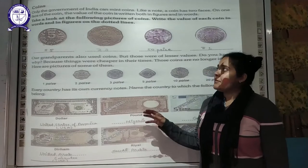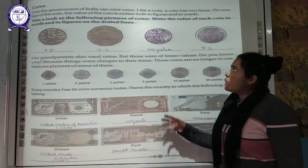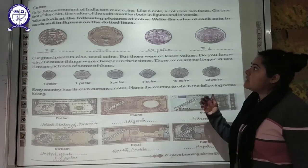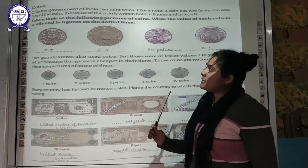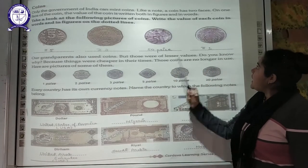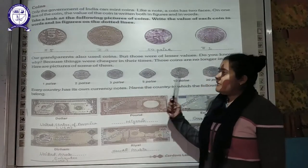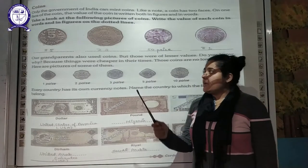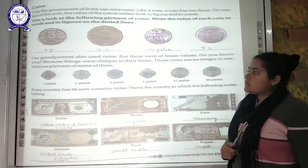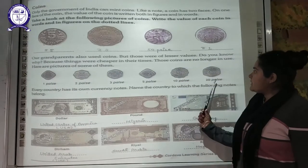Now we will discuss coins — money made of metal. Only the Government of India has the authority to mint coins. Like notes, coins also have two faces, and the value of the currency is written in both figures and words. You can see different coins here: 5 rupees, 2 rupees, 50 paise, and 1 rupee coin. Our grandparents also used coins, but those coins were of lesser value because things were not very costly then. Coins like 1 paise, 2 paise, 3 paise, 5 paise, 10 paise, and 20 paise are no longer in use.